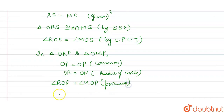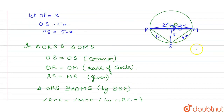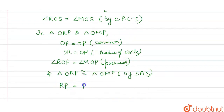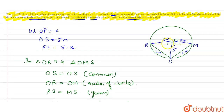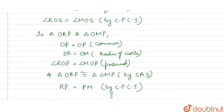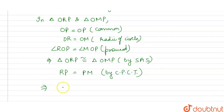तो यानि कि triangle ORP congruent हो जाएगा triangle OMP के by SAS। और अगर ये दोनों congruent triangles हो गए तो RP equals PM by CPCT। अब हम देखें कि RP और PM equal हो गए, और ये center of circle से pass कर रहे हैं, और RM chord of circle है — तो यानि center से जो line आ रही है ये bisect करती है chord को, तो ये perpendicular होती है इस chord के। यानि कि OP perpendicular to RM — because chord bisects the radius।